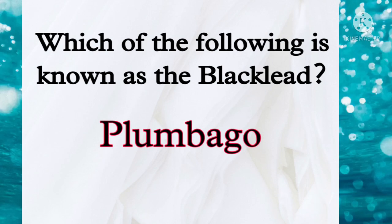The next question: which of the following is known as Black Lead? Graphite is also called plumbago or Black Lead. Graphite is a crystalline allotropic form of carbon, dark grey in colour, with hexagonal plates. It is an allotrope of carbon and has a layered structure consisting of rings of six carbon atoms arranged in widely spaced horizontal sheets.